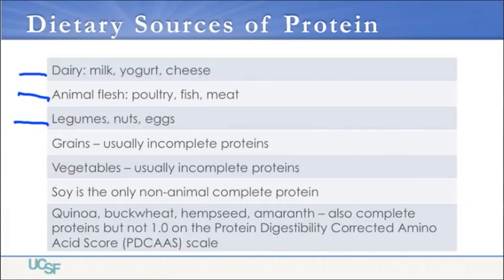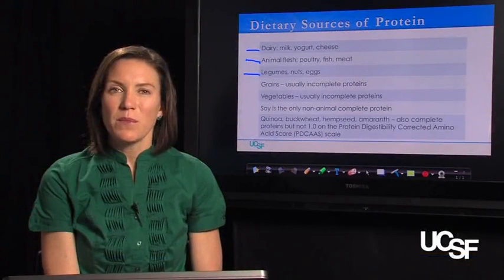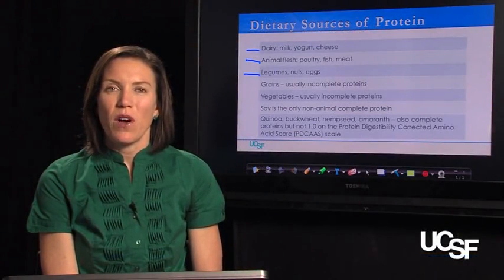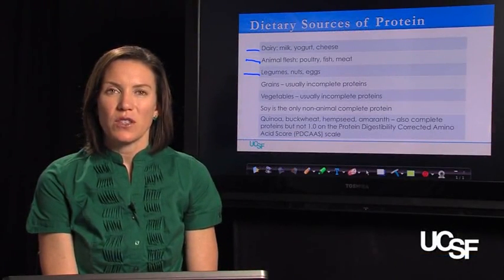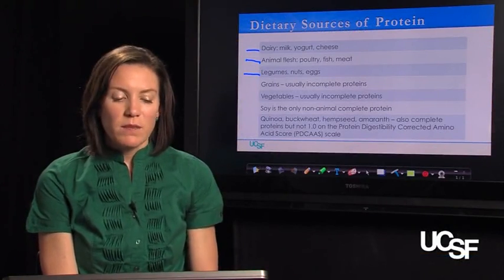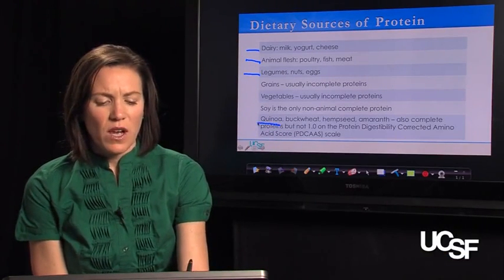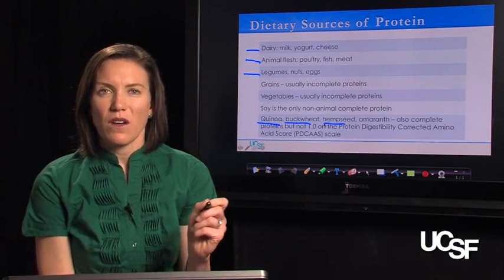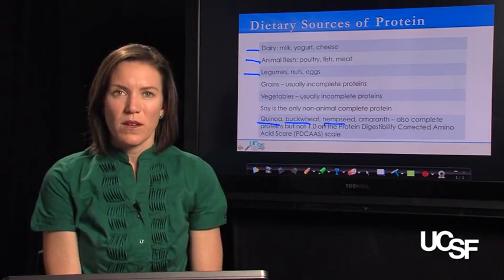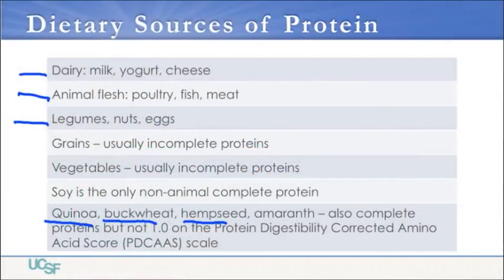Soy is the only non-animal complete source of protein — a complete protein being one that provides all of the essential amino acids. Some say there are other non-animal complete sources like quinoa, buckwheat, hempseed, and amaranth — these are very high protein grains that in some situations can be considered complete proteins as they do contain all of the essential amino acids.